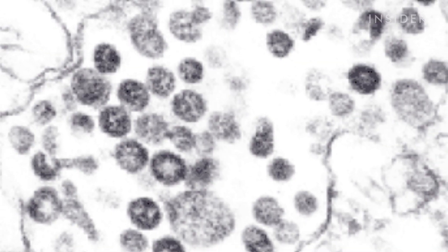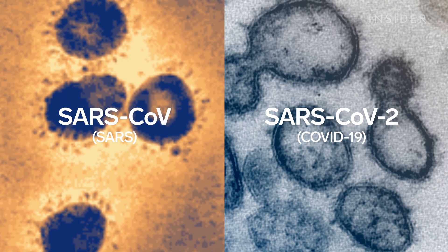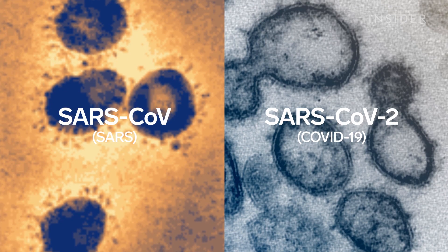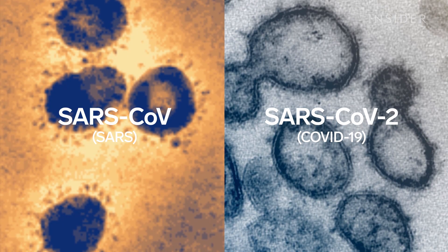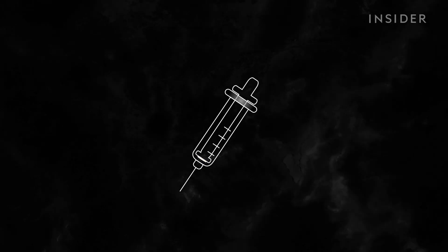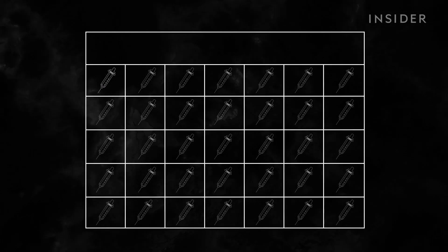Immunity to the SARS virus lasts roughly two to three years. Since it and the new coronavirus share a significant amount of genetic material, this could be a good estimate. We don't know exactly how often a new vaccine for COVID-19 will be necessary, but if that's the case, a vaccine should last just as long, since the virus is mutating so slowly.